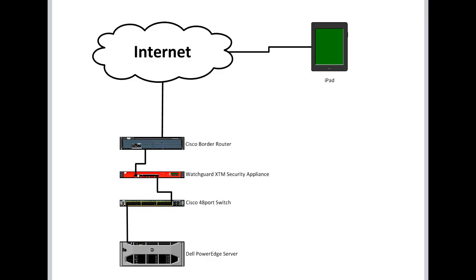So if I did a ping from the iPad to the external interface of the WatchGuard security appliance, I could get replies. Now between the WatchGuard security appliance and the Dell PowerEdge server, which are inside the corporate network, I obviously want those resources secured, and that's where the VPN is going to come in.